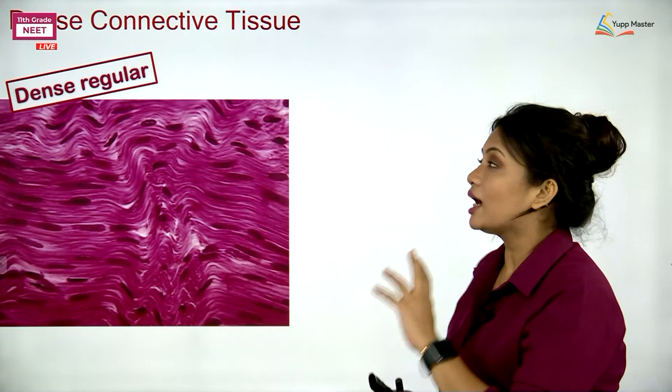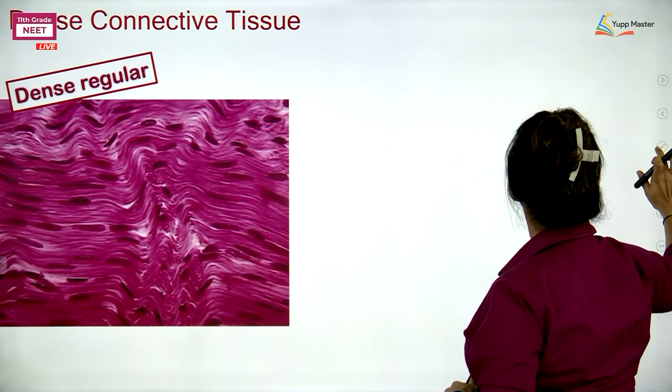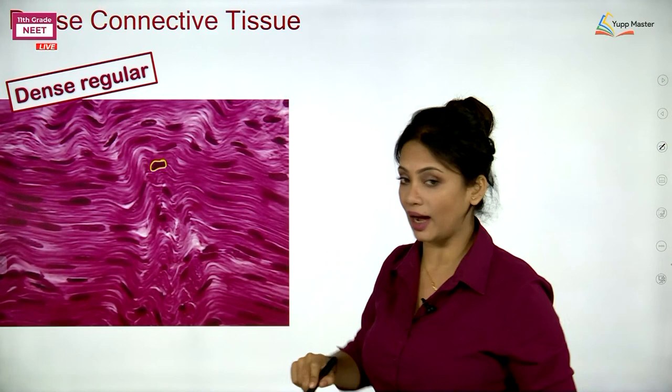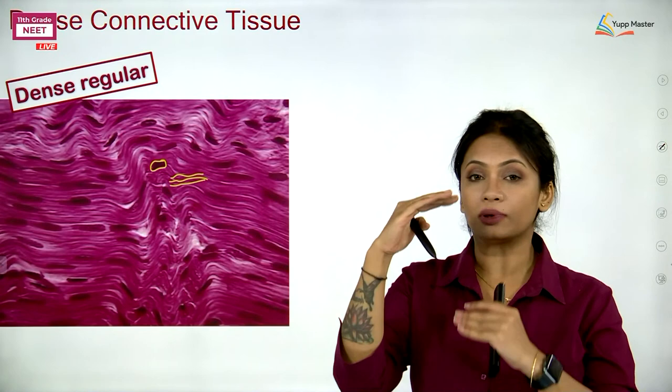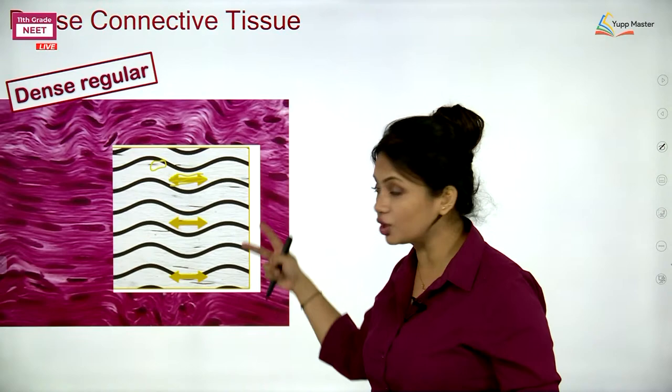When I am talking about dense regular — when I say regular, it means that these fibres and those cells are placed very near each other, very tightly packed, and the fibres are parallel to each other. This is why I am calling this dense regular connective tissue.